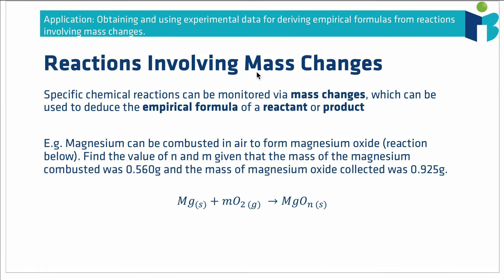Another example involves reactions with mass changes: we can relate mass changes to the empirical formula of a reactant or product. Consider the combustion of magnesium in air to form magnesium oxide — the formula is shown here, and we need to find the values of n and m given that 0.56 g of magnesium is combusted and 0.925 g of magnesium oxide is collected. We assume the reaction goes to completion, so all magnesium has been converted to magnesium oxide.